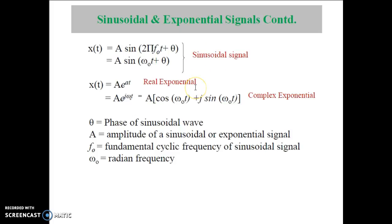If x(t) equals A·e^(at), it is called a real exponential signal. If x(t) equals A·e^(jω0·t), which equals A·[cos(ω0·t) + j·sin(ω0·t)], such signals are called complex exponential signals. Here θ is the phase of the sinusoidal wave, capital A represents amplitude, f0 represents the fundamental cyclic frequency, and ω0 represents radian frequency.